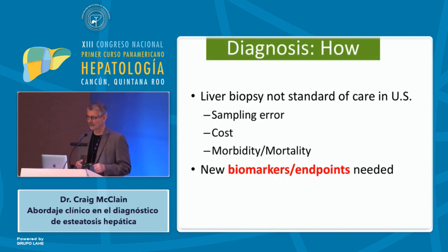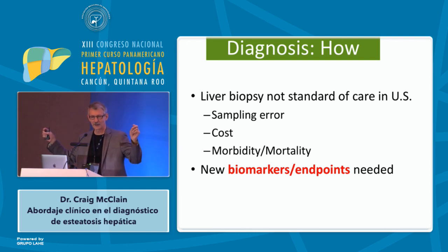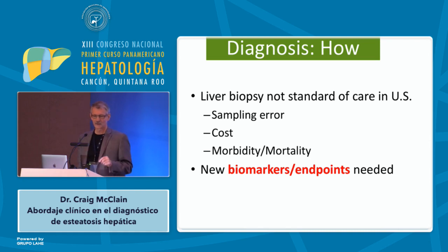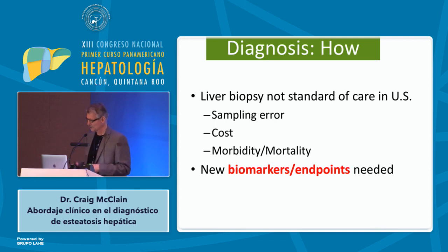How do we diagnose alcoholic hepatitis? In the United States, liver biopsy is not the standard of care. Sampling error is a big problem — in explanted livers from transplanted patients with alcoholic hepatitis, one area may show severe alcoholic hepatitis with fatty liver while another area shows only scar tissue. With a liver biopsy you're sampling 1/50,000th of the liver, so sampling errors are very common. High cost — about $10,000 for a transjugular biopsy in the US — and up to 1 in 1,000 people die from the procedure. We need new biomarkers and endpoints.